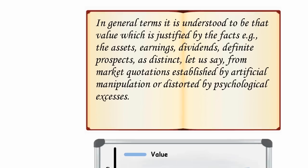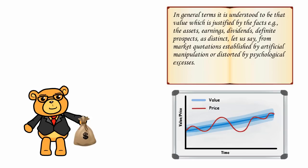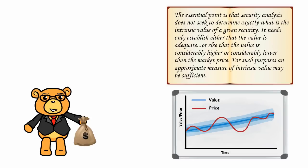The thing about Graham's approach is that we aren't required to measure intrinsic value precisely. We are only interested in how it compares approximately to the prevailing market price. Security analysis does not seek to determine exactly what is the intrinsic value of a given security. It needs only establish either that the value is adequate, or that the value is considerably higher or considerably lower than the market price. An indefinite and approximate measure of the intrinsic value may be sufficient.